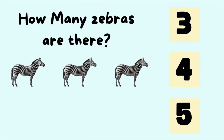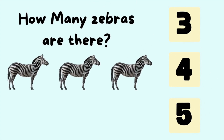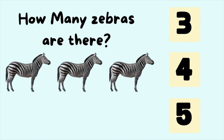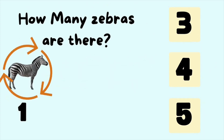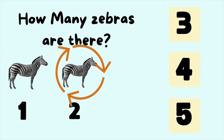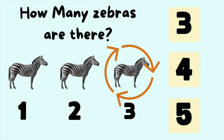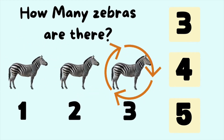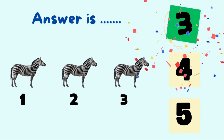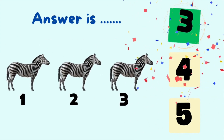How many zebras are there? Let's count the number of zebras. It is one, two, three zebras. So the answer is three zebras.